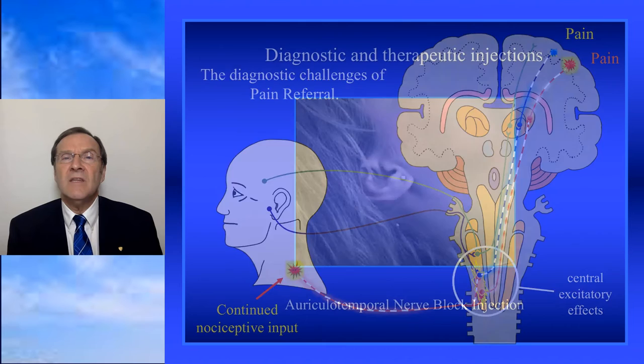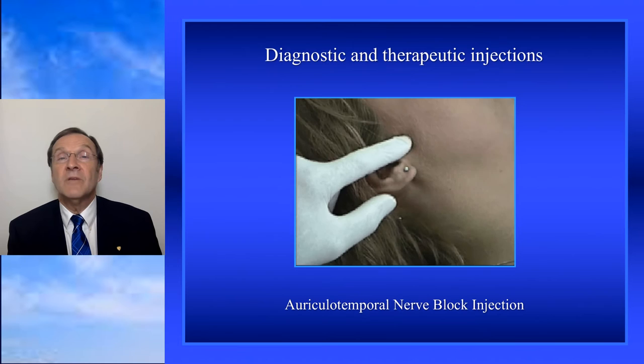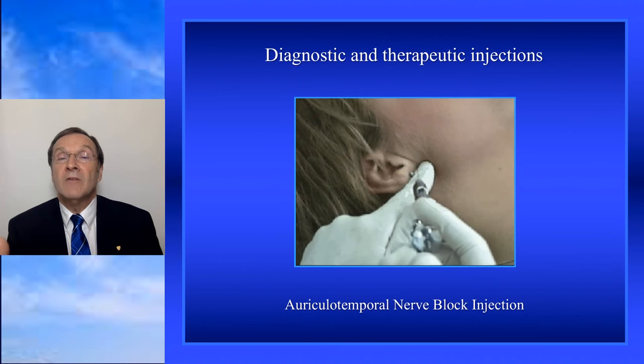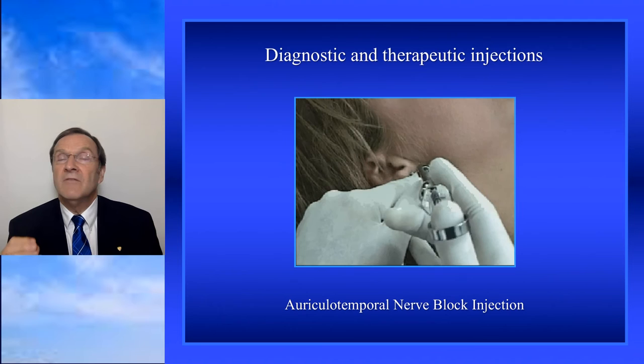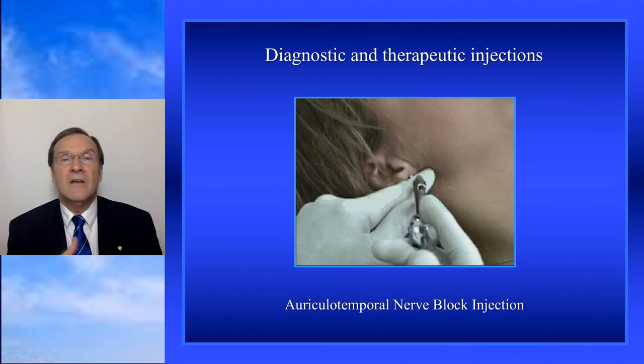We'll talk about how diagnostic blocks can help identify where pain is coming from. The auricular temporal nerve block, for example, obliterates all pain sensations from the joint — very diagnostic for determining whether pain is really coming from the joint. I'll share two lectures covering a whole series of muscle and joint injections you can provide patients to help differentiate pain.